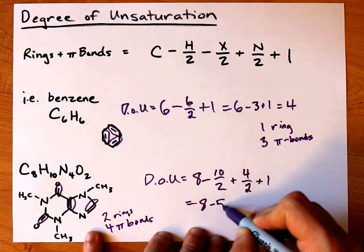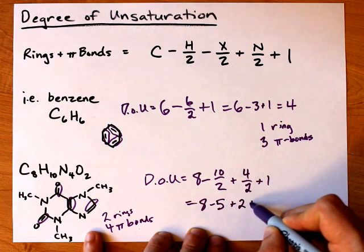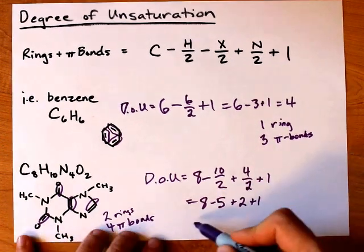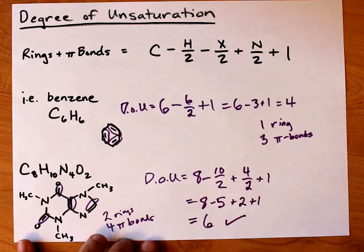That gives me 8 minus 5 plus 2 plus 1. Eight minus 5 is 3, plus 2 is 5, plus 1 is 6. Ah, the system works.